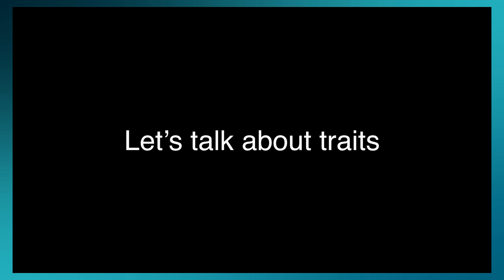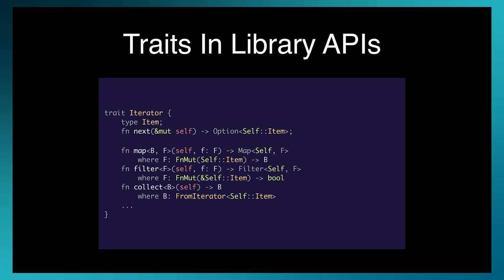Traits are my favorite feature of Rust. I consider them a bigger selling point of the language than even the awesome memory management model — ownership and borrowing. This is the iterator trait. If you want to define a new iterator, all you need to define is the next method, which defines how to get the next item. And you get all these awesome adapters for free — map, filter, fold, collect — written in a way that doesn't need heap allocations or virtual calls. They're transparent to the optimizer, so you get both convenience and really performant code.